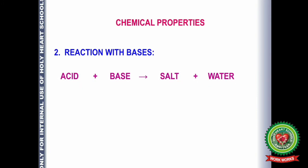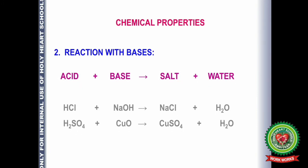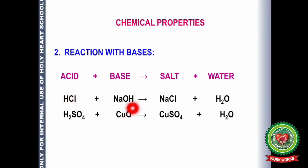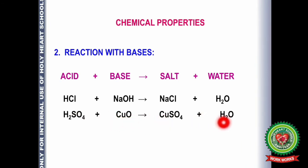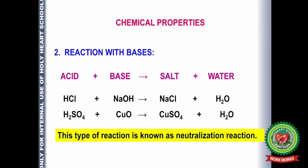The second reaction is of acids with bases. When an acid reacts with a base, it gives salt and water. Acids contain hydrogen and bases contain OH or oxide — OH and H combine to form water, and the leftover part is the salt. For example, HCl with NaOH gives NaCl, and H₂SO₄ with copper oxide gives copper sulfate and water. These reactions are known as neutralization reactions.